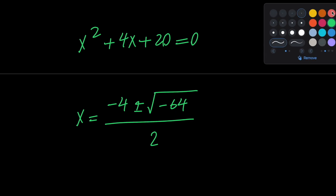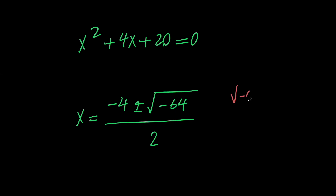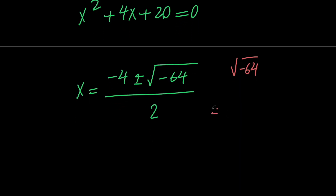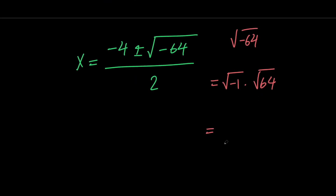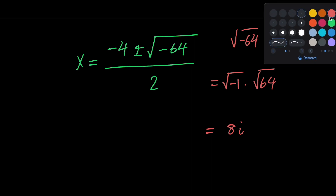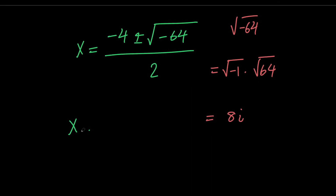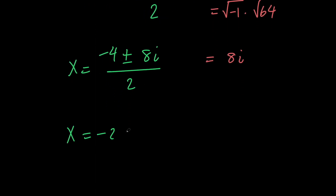Now notice that the square root of negative 64 is the same thing as the square root of negative 1 times the square root of 64. The square root of negative 1 is i and the square root of 64 is 8, therefore this is equal to 8i. So x is equal to negative 4 plus or minus 8i divided by 2, which simplifies to negative 2 plus or minus 4i.